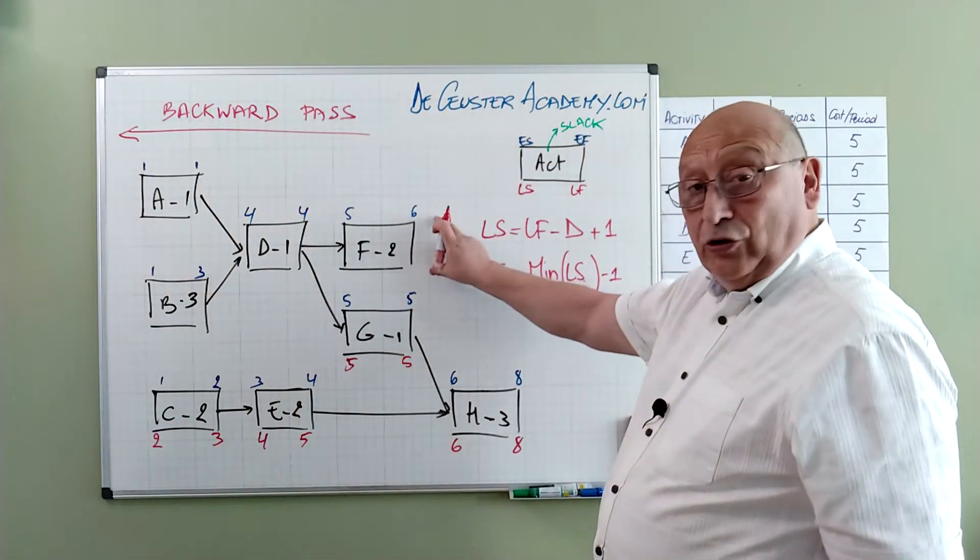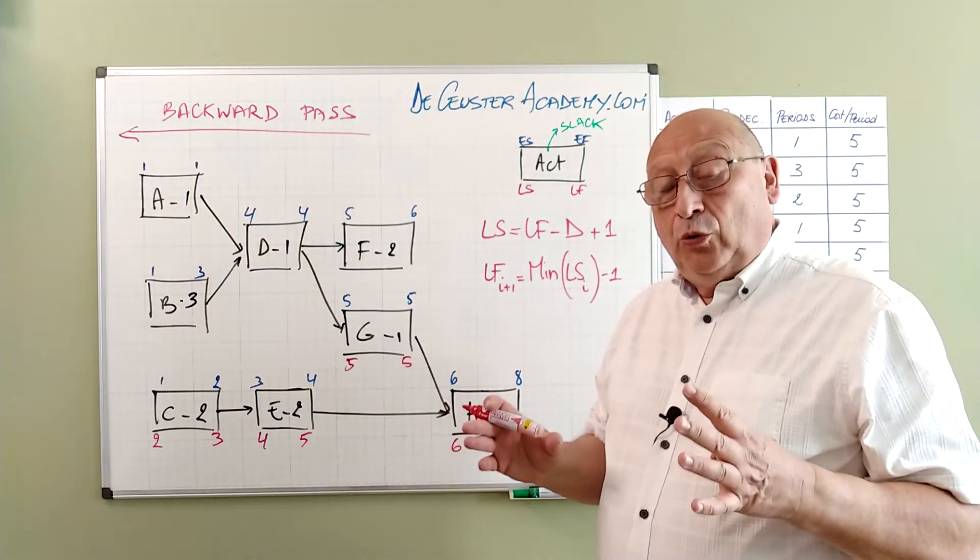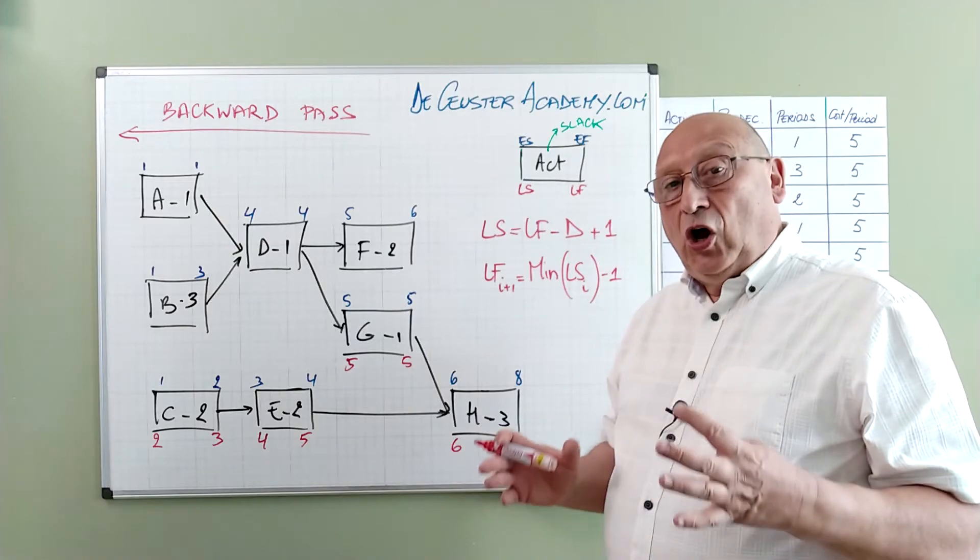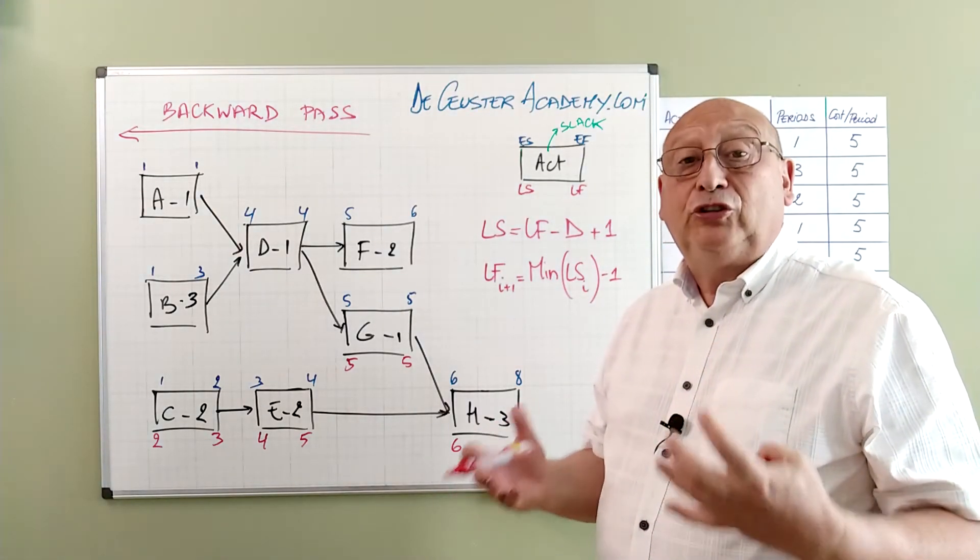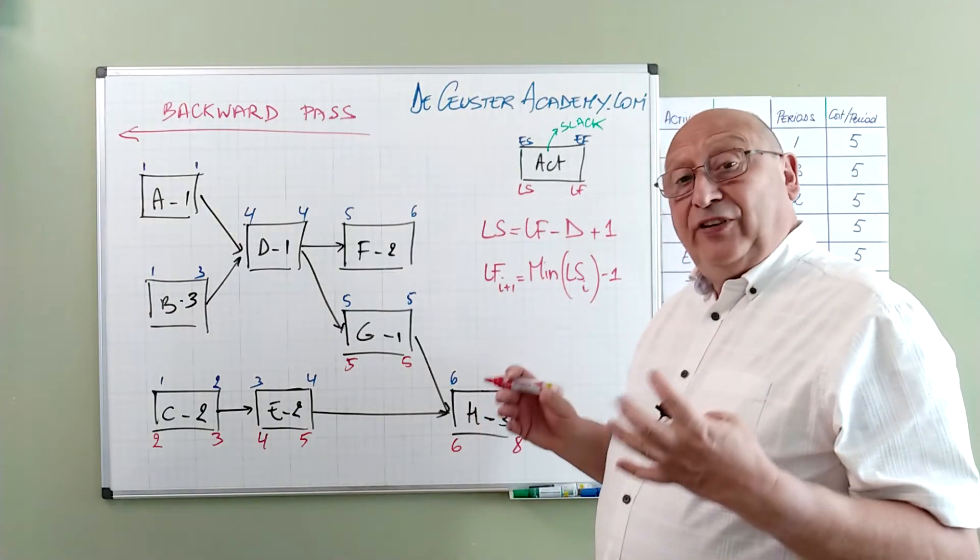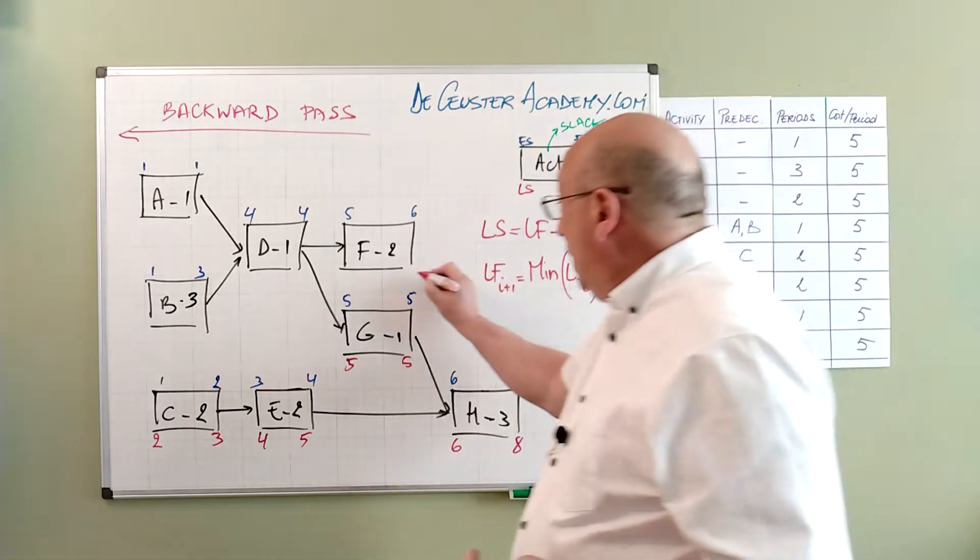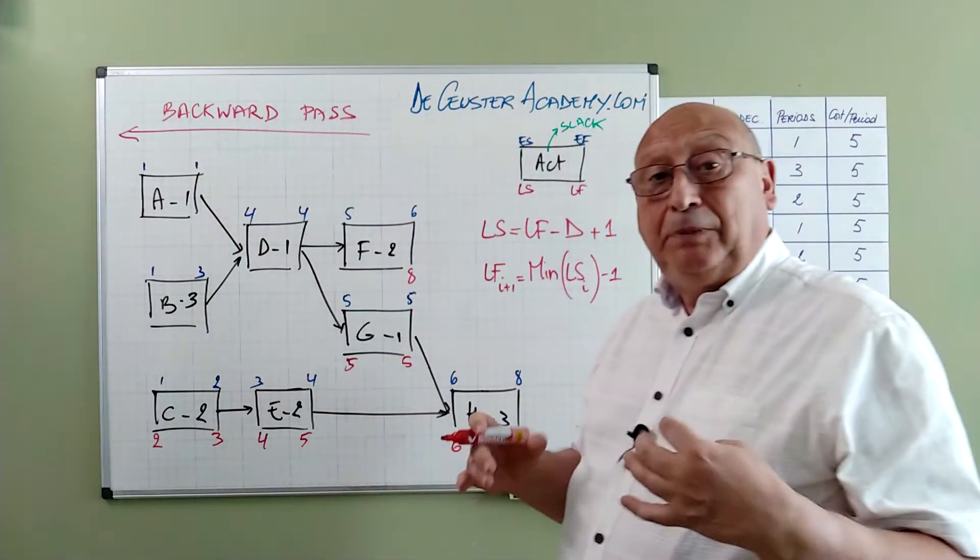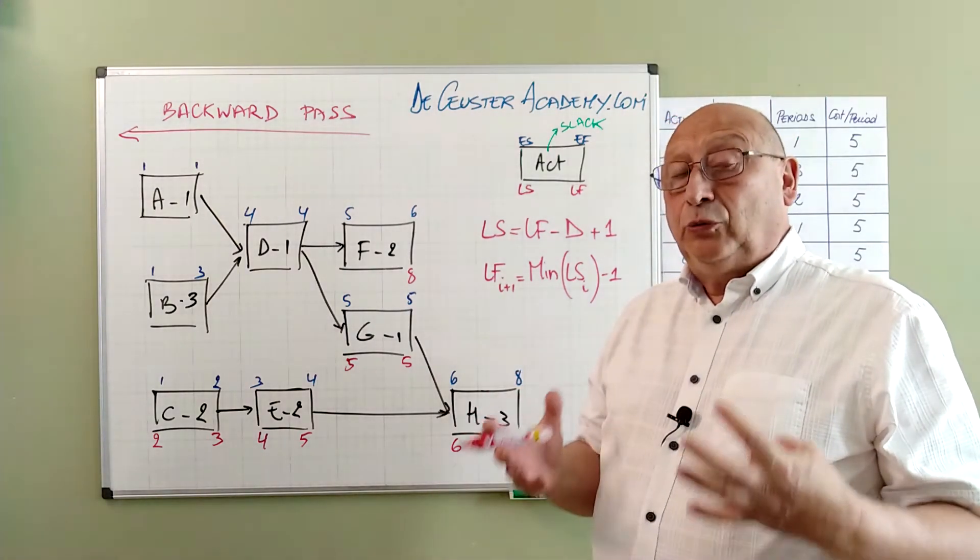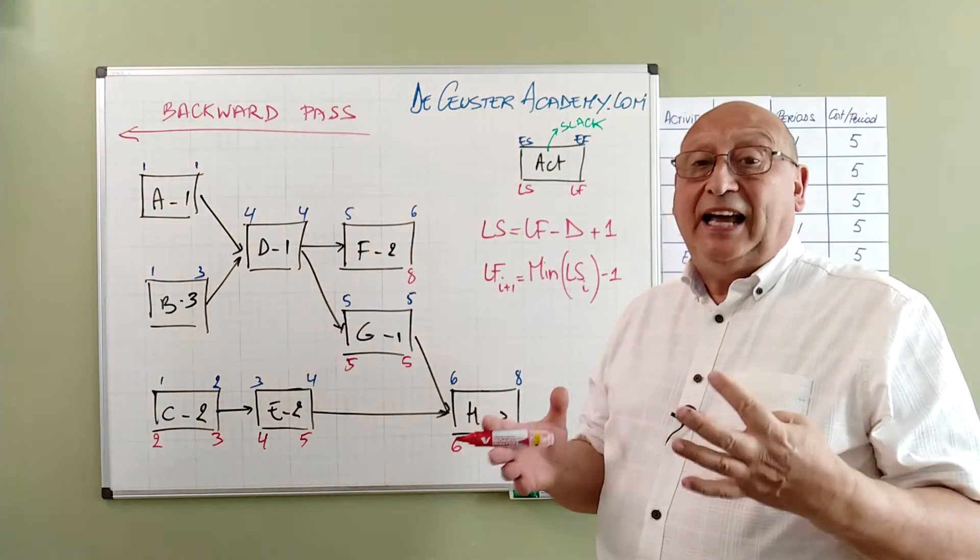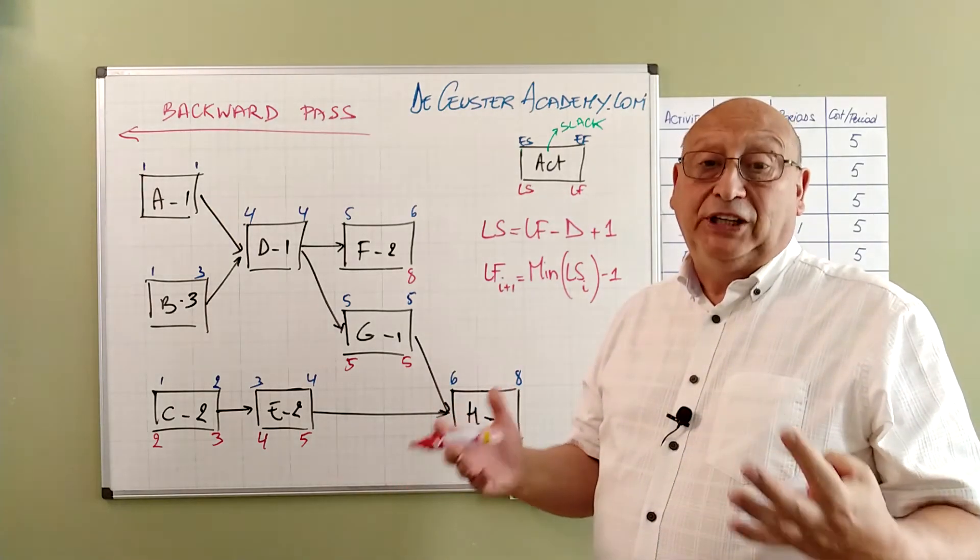Now we have to continue here with F. What is the late finish for F? We have to see the late finish of the project is the period or the time we have to start from. F can finish not later than this value. I see sometimes people writing here 6. That's not correct. We have to see what is the end date of the project. The end date of the project is period 8.